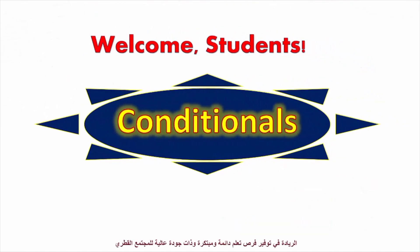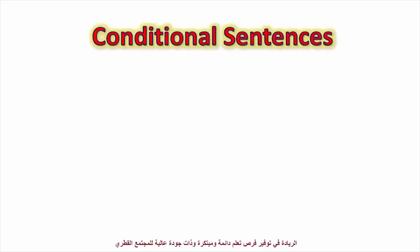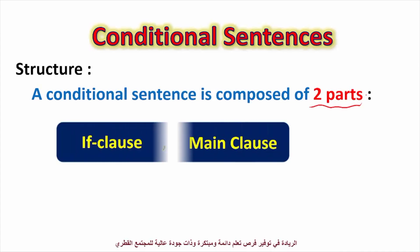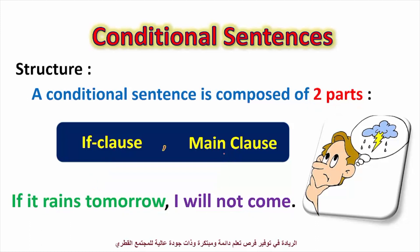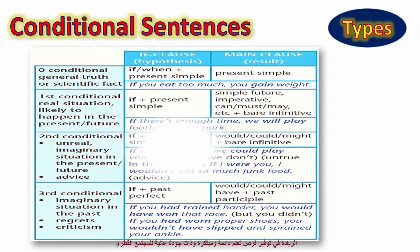In this video we are going to learn about conditionals — conditional sentences. The structure of a conditional sentence is composed of two parts: the if clause and the main clause. Look at this example: 'If it rains tomorrow, I will not come.' 'If it rains tomorrow' is the if clause; 'I will not come' is the main clause.